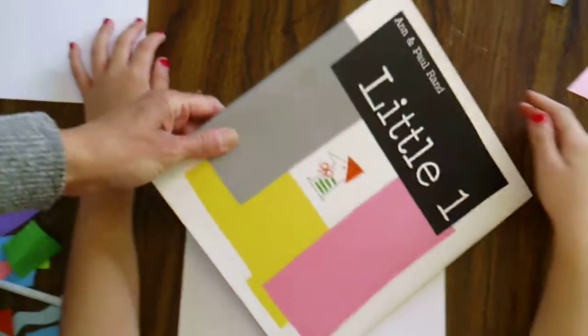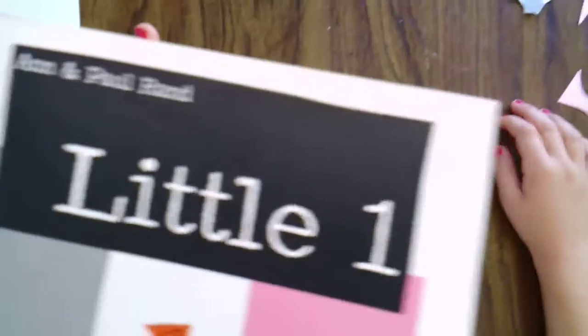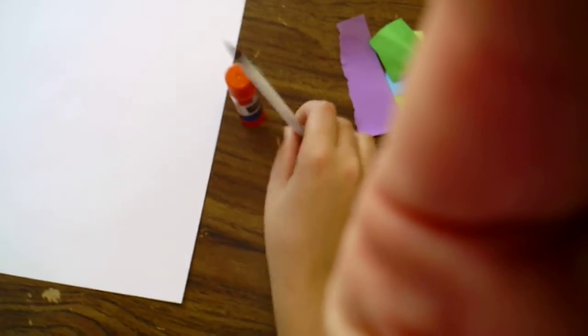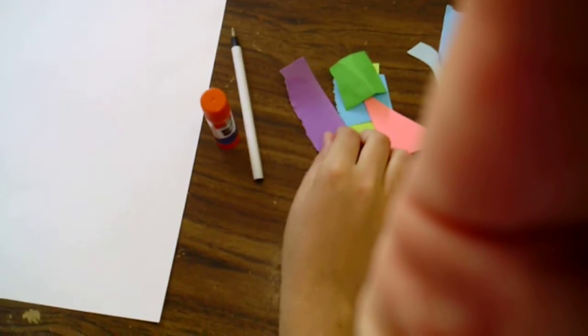Here's our wonderful book Little One by Ann and Paul Rand. Mikey, can you show us what we need? First a glue stick, a pen, a black ink pen, and then you're going to get some scrap paper.